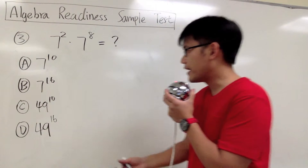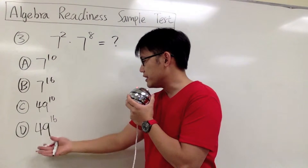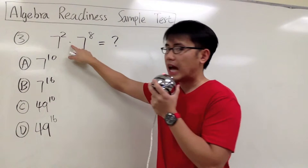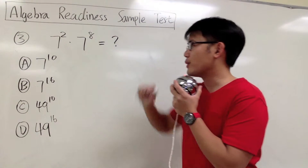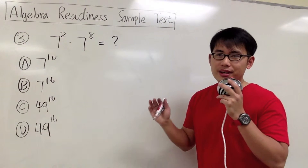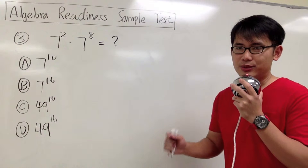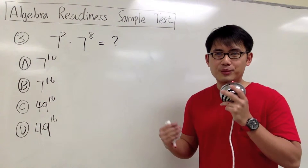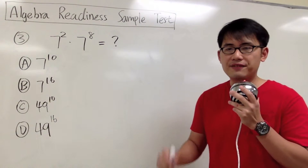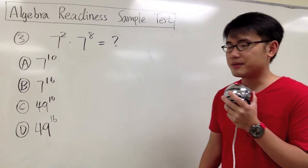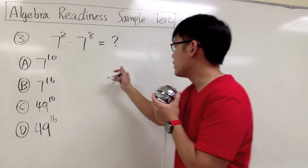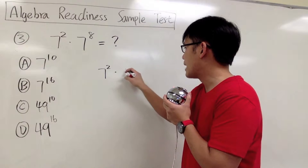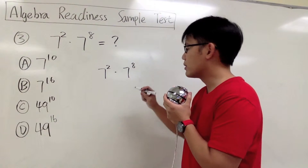For number 3, we are going to find out which of these is the same as 7 to the 2nd power times 7 to the 8th power. This is testing us about the rule of exponents. Let's investigate together. Let me write down the question again right here: 7 to the 2nd power times 7 to the 8th power.